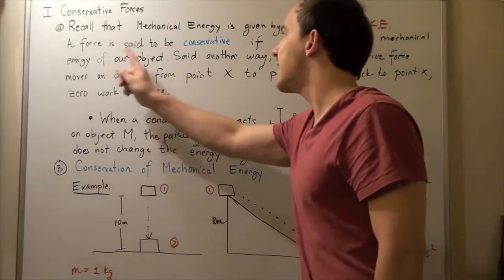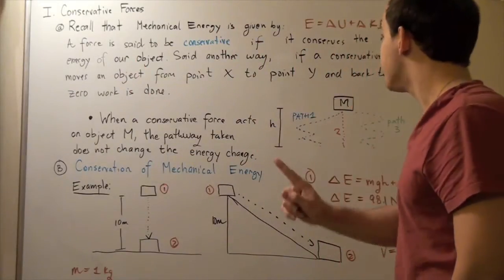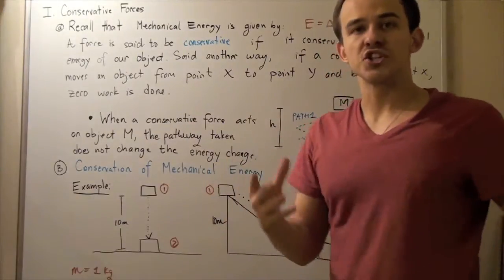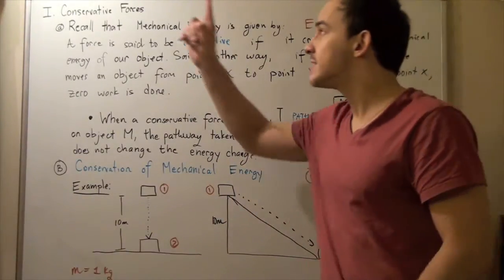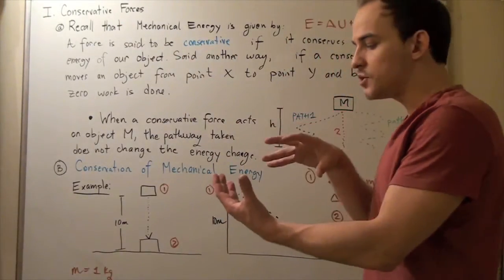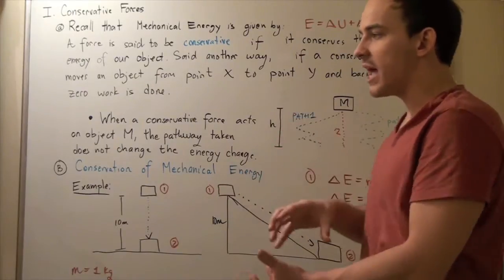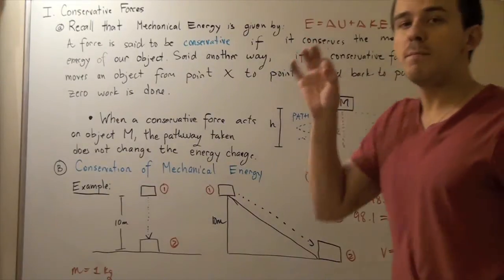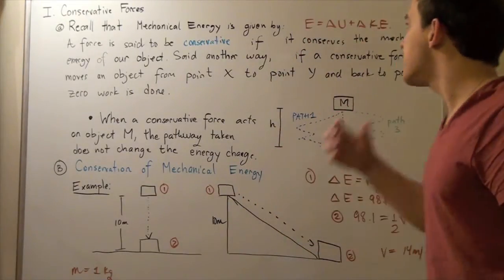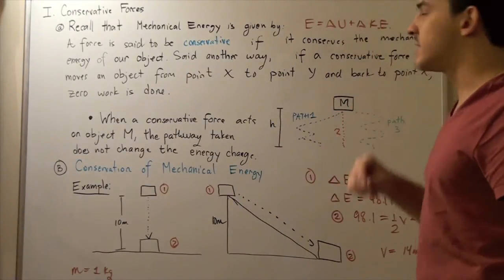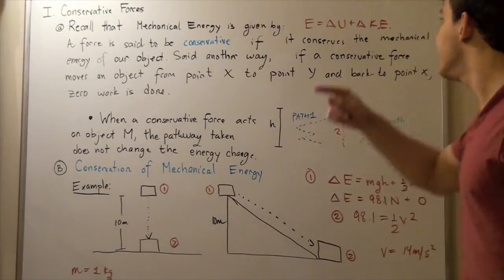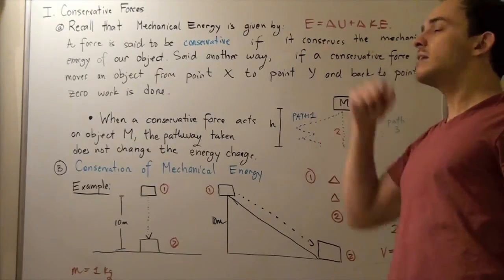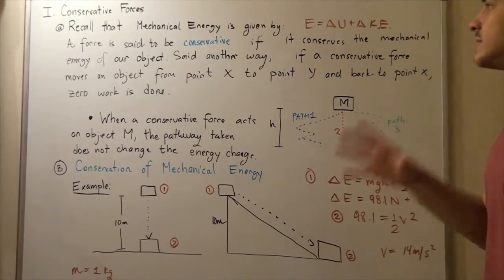A force is said to be conservative if it conserves the mechanical energy of our system. In other words, if a conservative force acts on our object and moves it from some point X to another point Y, the mechanical energy remains the same. If that object loses some potential energy, it must gain that amount of kinetic energy so that our total mechanical energy is conserved.